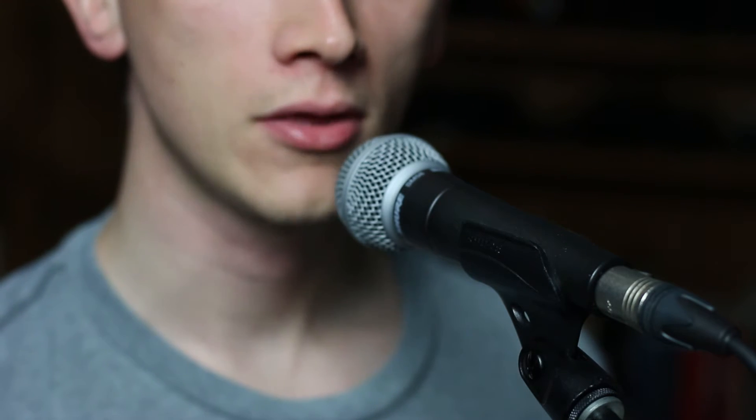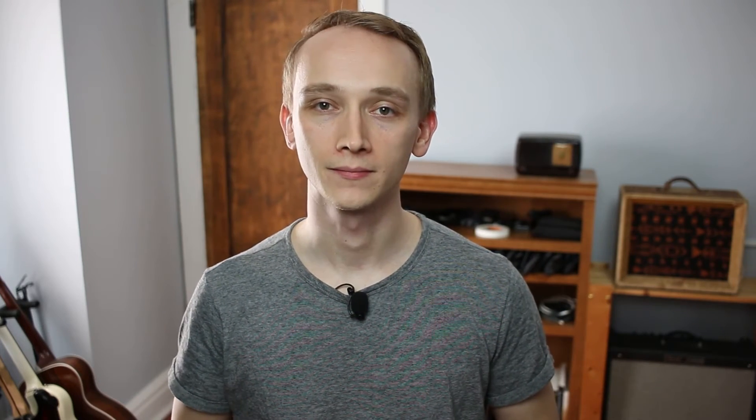A microphone captures sound by converting pressure changes in the air into electrical currents in a wire. The electrical currents created by these pressure changes are very subtle. That's why we use a microphone preamp to amplify the signal to a more usable level. A microphone preamp takes in a mic level signal, amplifies it, and outputs a line level signal.